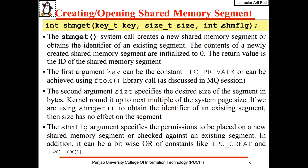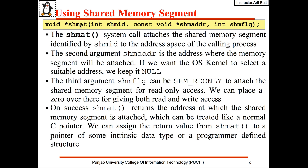The shmat (shared memory attach) system call attaches the shared memory segment identified by the first argument shmid to the address space of the calling process. The second argument is the address where the memory segment is to be attached; if we want the OS kernel to select a suitable address, we keep NULL here, and it is always recommended to keep NULL in the second argument of this call. The third argument, shmflag, can be SHM_RDONLY if you want to attach the shared memory segment for read-only access, or we can place zero to give both read and write access. A successful shmat call will return the address at which the shared memory segment is attached.